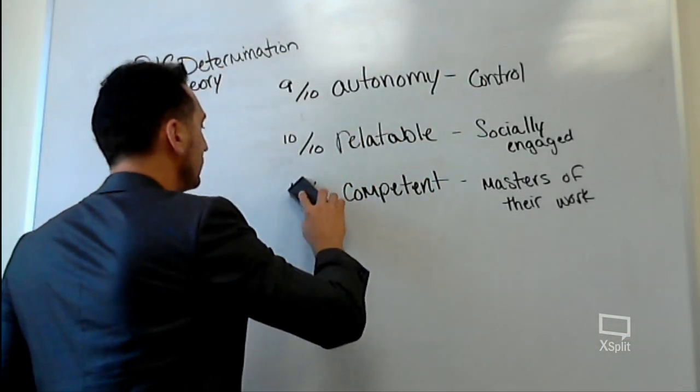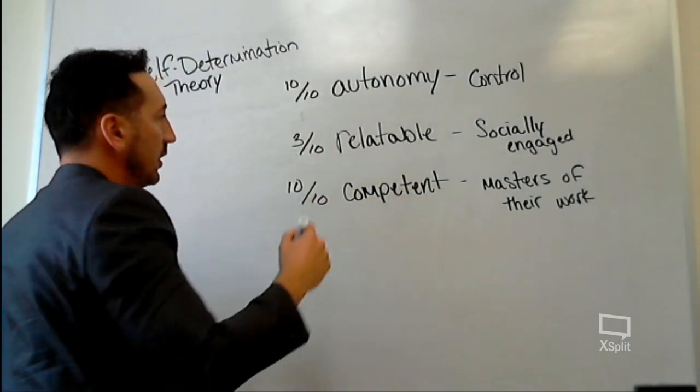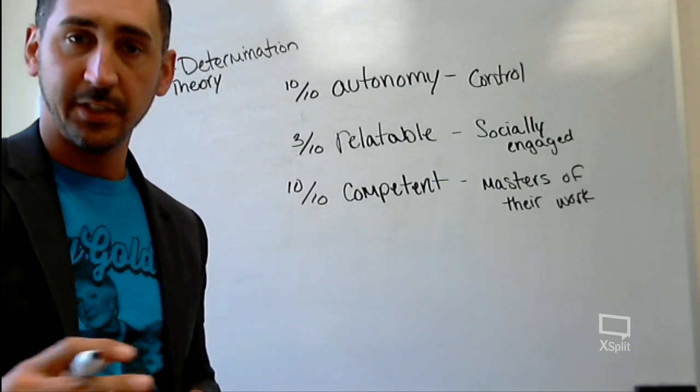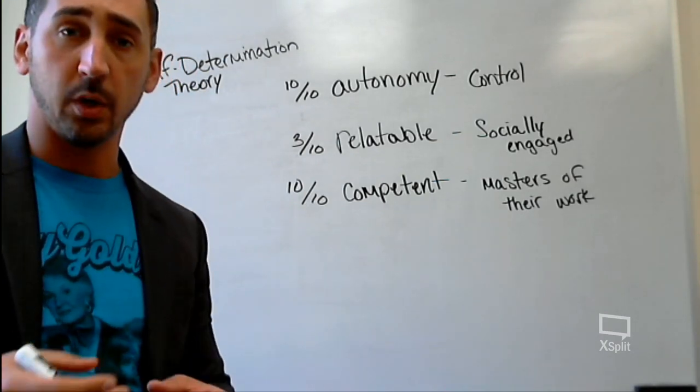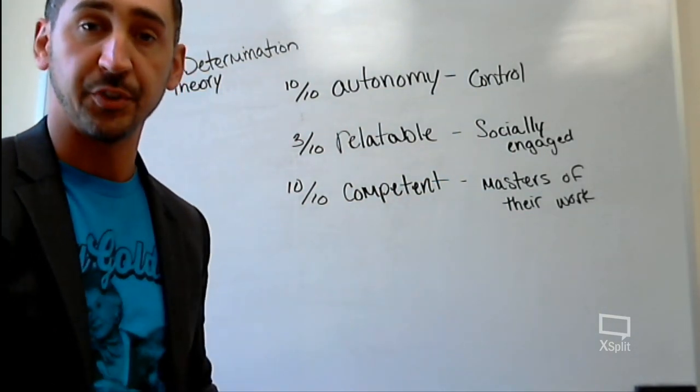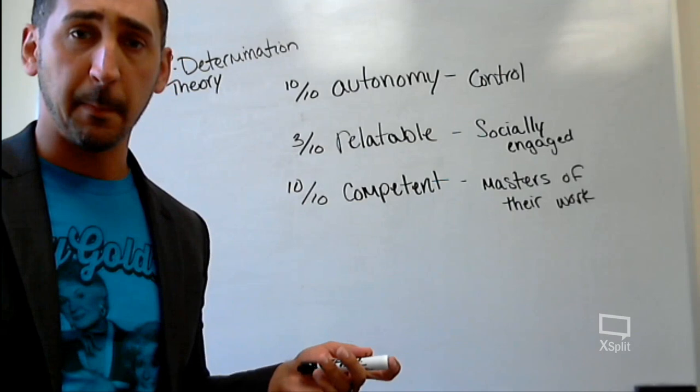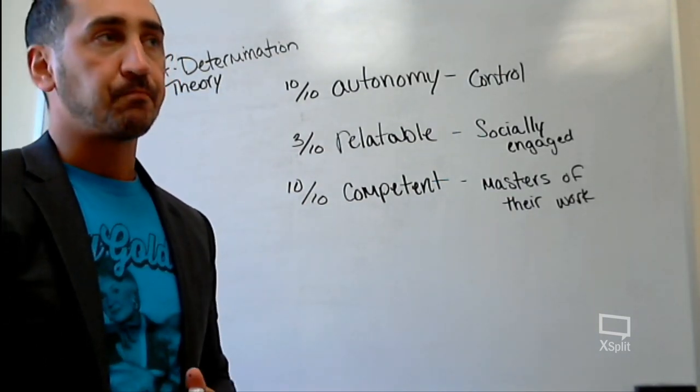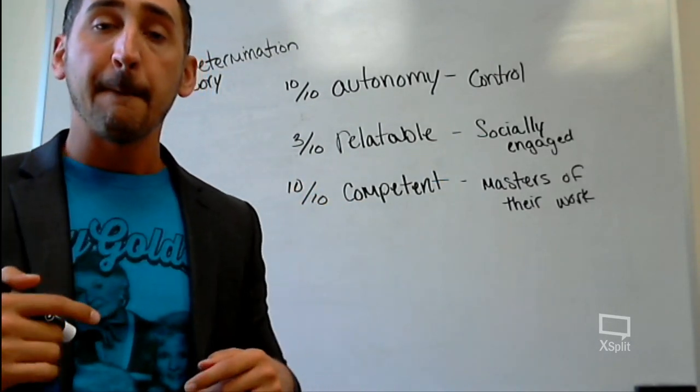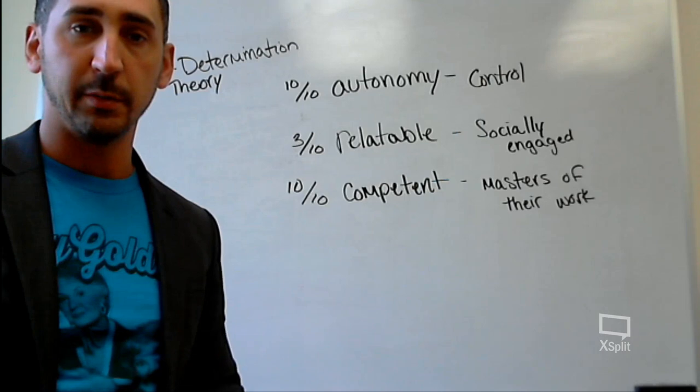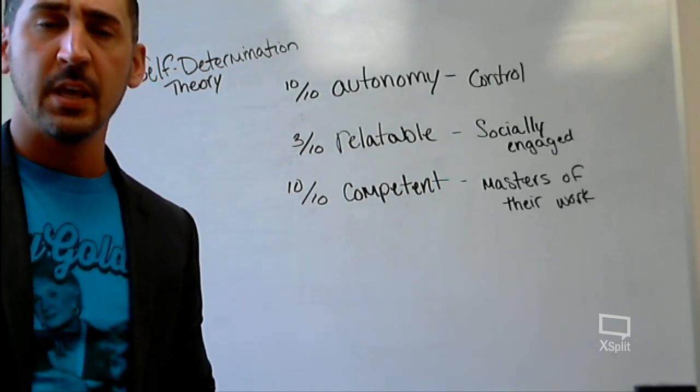But then it's vice versa. If you look at it the other way, if they have 10 in competence and they have 10 in autonomy, but they're sitting at a 3 in relatable, that's the person that comes to work. They have complete control of their schedule. They can do whatever they want. They're completely competent in their work. They're masters. They do everything right. But then you kind of see them in their office by themselves all the time. And maybe they're introverted. That's fine. But everybody needs some kind of interaction, right?